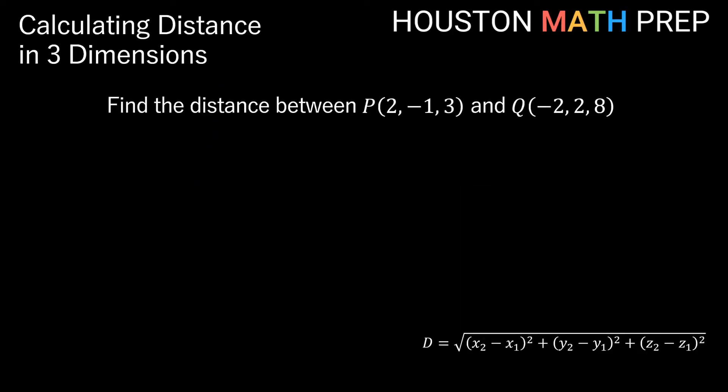Let's work through a few examples of finding some distances in R3. We're going to go ahead and keep our distance formula for 3D space down in the bottom right there. So here we're going to find the distance between the point P, which is (2, -1, 3), and Q, which is (-2, 2, 8). So in terms of my formula here, if this is my first point P, then that makes this x1, this y1, and this z1.